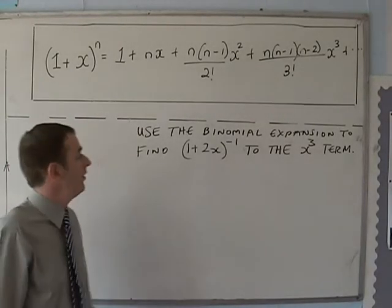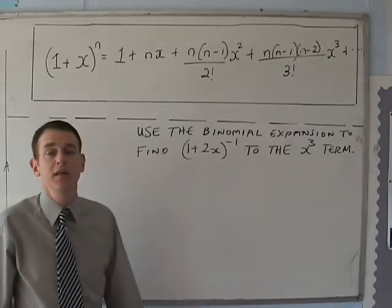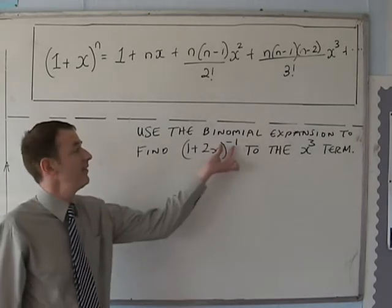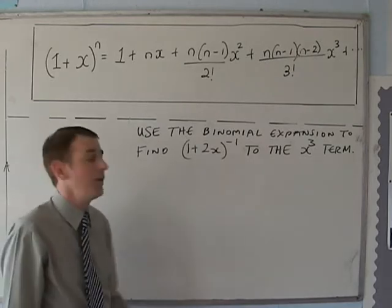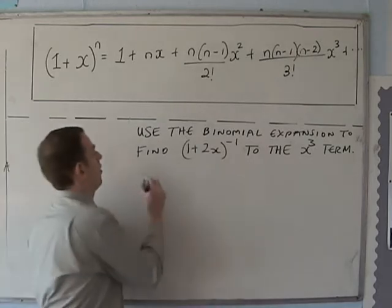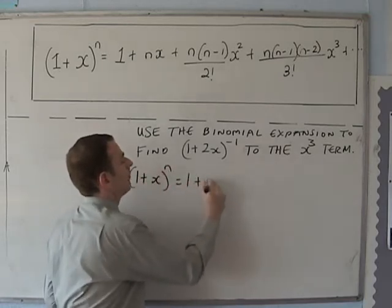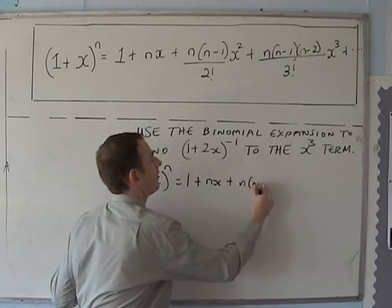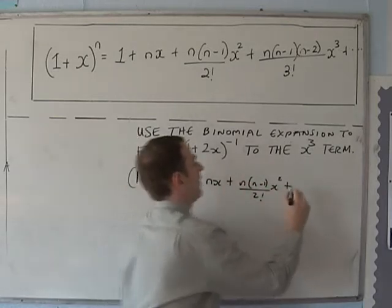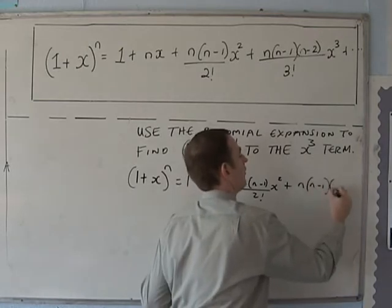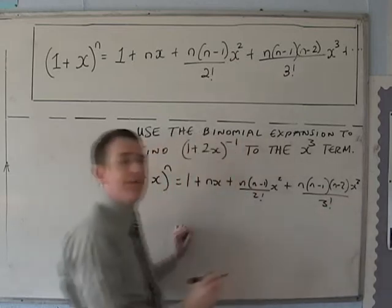Use the binomial expansion to find the x cubed term of (1+2x)^(-1). This time we've got a negative power. In the exam we always start off by writing down the formula: (1+x)^n equals 1 plus nx plus n(n-1)/2! times x squared, plus n(n-1)(n-2)/3! times x cubed.